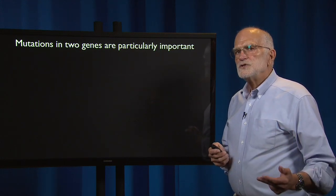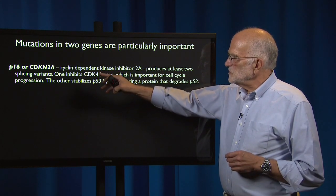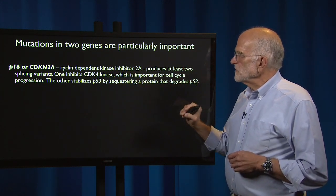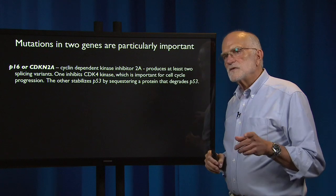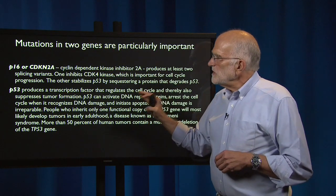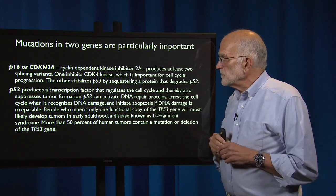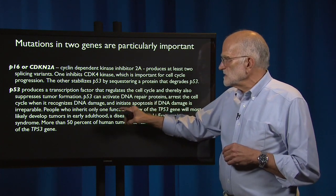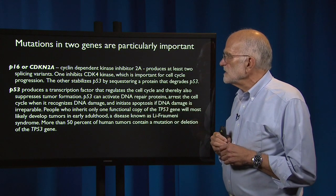The two genes in which mutations are particularly important are P16, also called CDKN2A, a cyclin-dependent kinase inhibitor. It produces two splicing variants: one inhibits CDK4 kinase, which is important for cell cycle progression, and the other stabilizes P53 by sequestering a protein that degrades P53. P53 produces a transcription factor that regulates the cell cycle and suppresses tumor formation. It can activate DNA repair proteins, arrest the cell cycle when it recognizes DNA damage, and initiate apoptosis if DNA damage is likely to be irreparable.